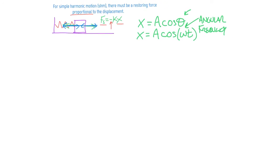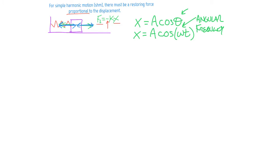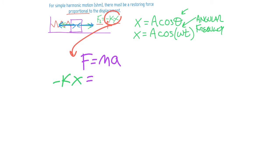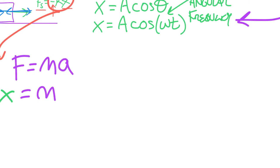We'll let Newton's second law guide us. Starting with F = ma: the restoring force — the spring force — is minus kx, so minus kx = ma. We have x expressed as a function of time, so to get acceleration we take the derivative of x to get velocity, and then take another derivative to get acceleration.